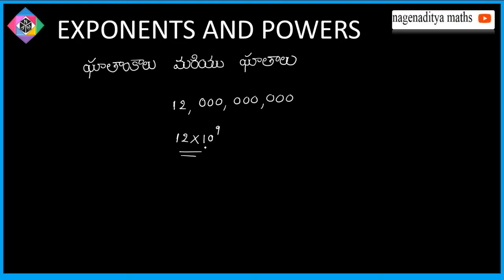If you want to read this, we say '10 is raised to the power 9.' So, 10 power 9 is called the exponential form. We use exponents to write scientific formulas and very large numbers easily.